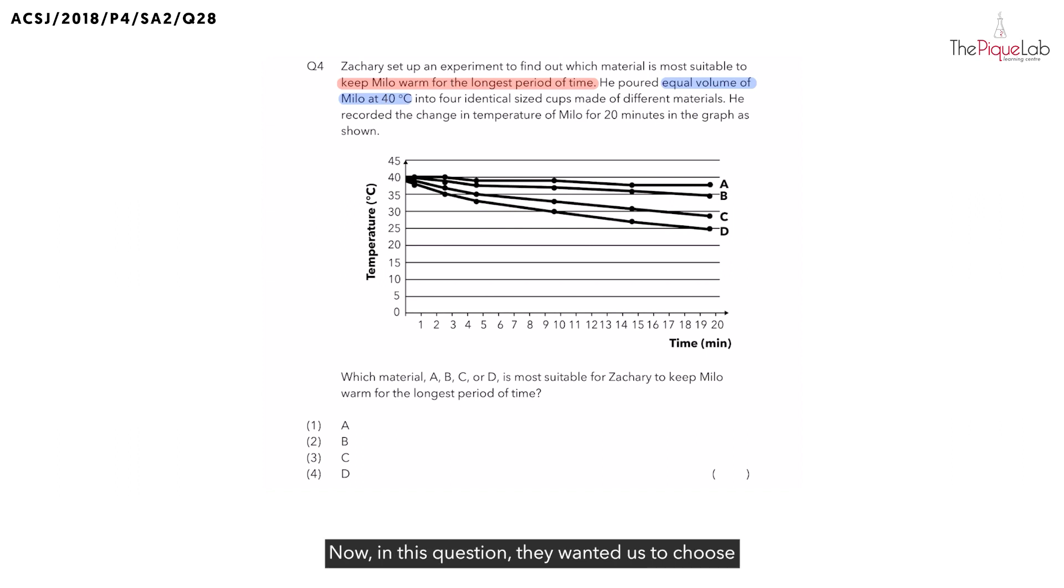Now, in this question, they wanted us to choose which of the materials A, B, C or D is the most suitable for Zachary to keep his Milo warm for the longest period of time. Now, before we answer this question, if we have a cup of Milo that is hot and we leave it out into the open, what is going to happen to the Milo?